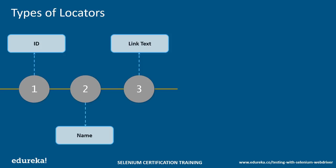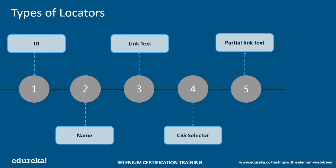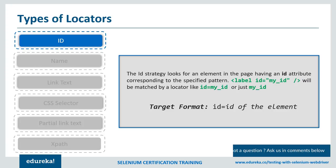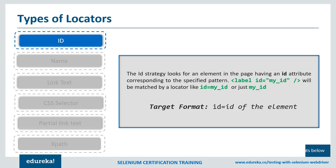ID is the best and most popular method to identify a web element. The ID of each element is alleged to be unique. IDs are the safest and fastest Locator option and should always be the first choice even when there are multiple choices. It's like an employee number or account number which will be unique. The target format is: ID equals the ID of the element. Now let's see how to locate a web element using the ID Locator.